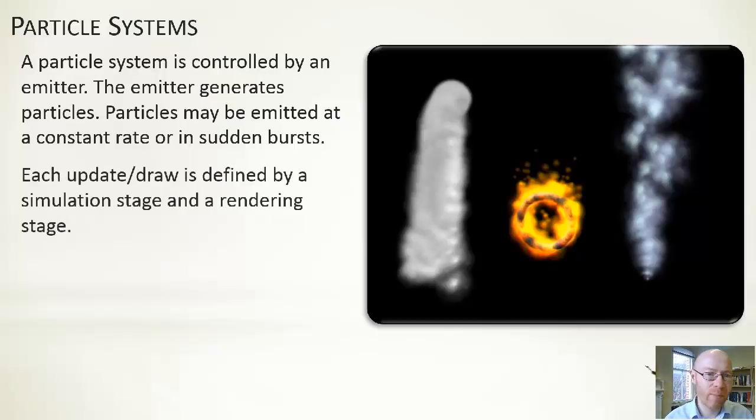Each time we update and draw this, so effectively from the emitter's point of view, if we update it, we're asking it, do you need to create any new particles? For each particle, when we update it, it'll have different positions and properties, and we'll evolve those properties. When we're drawing it, you don't actually draw the emitter, you'll just simply draw each of the particles in terms of their location within your game world.